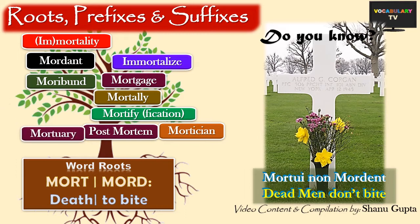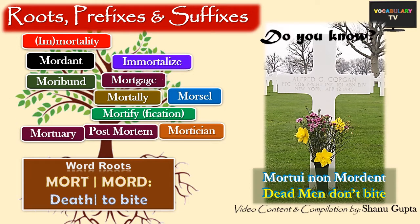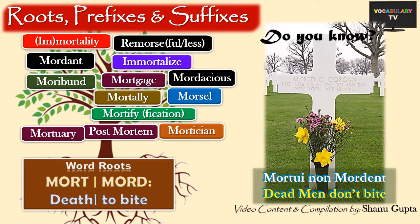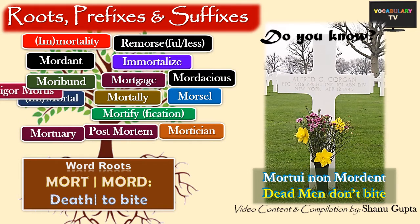The first root 'mort' means death and 'mod' means bite. So apart from similar spellings, there goes the connection between them. In this video lesson, we shall be covering dozens of important words in English derived from these roots. So let's start.